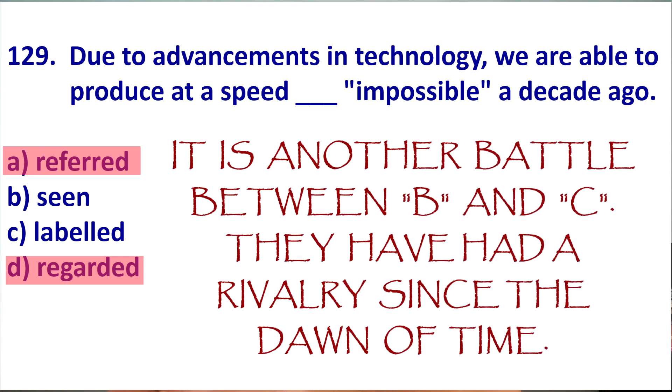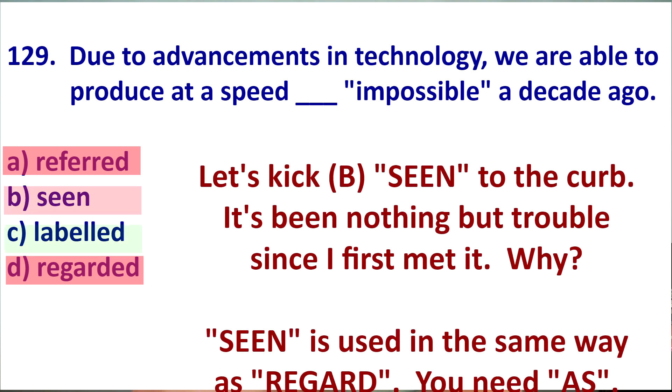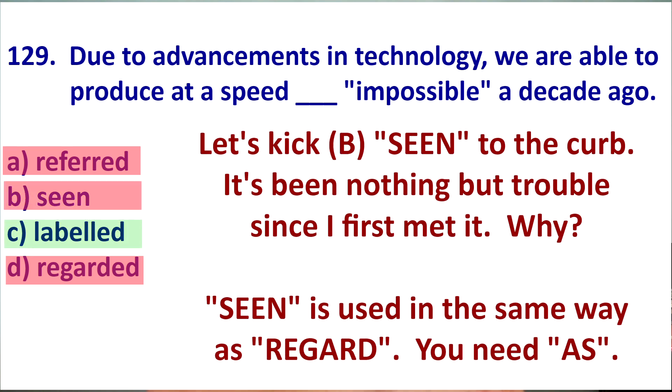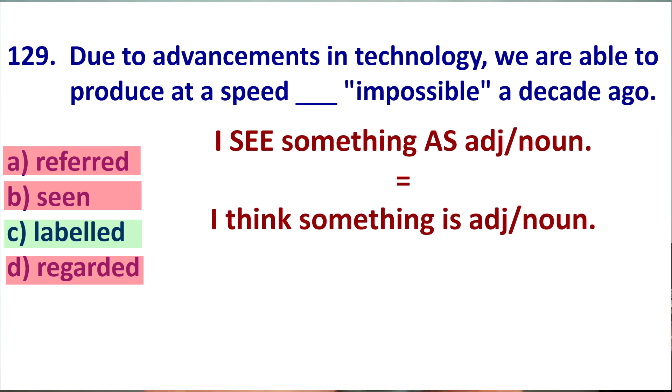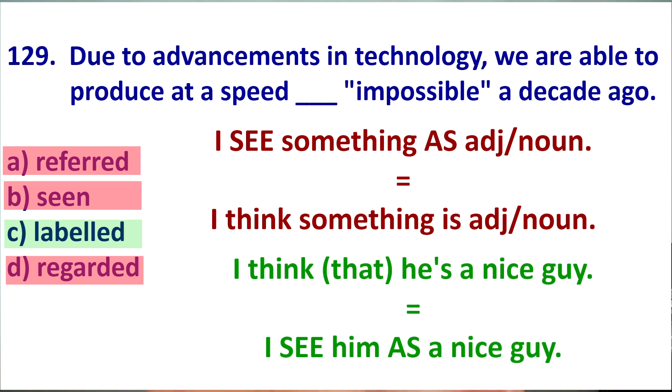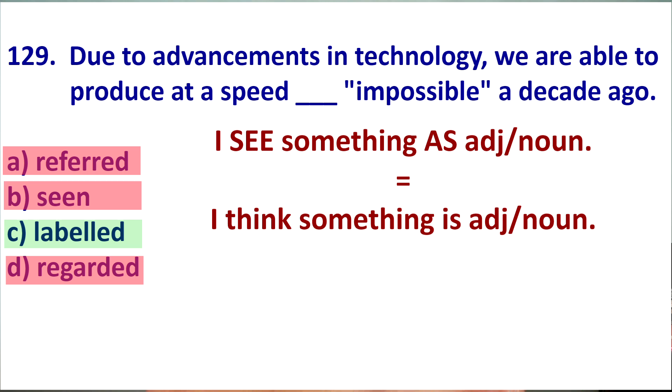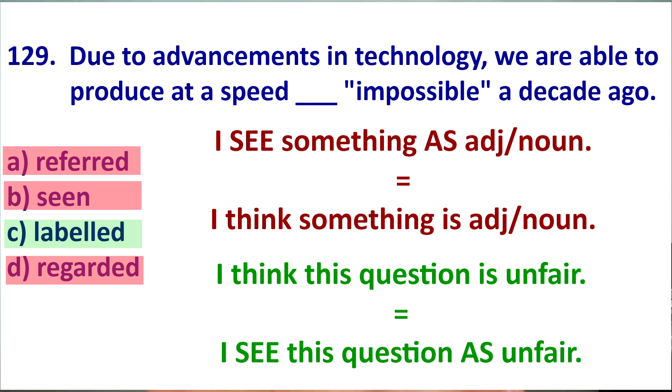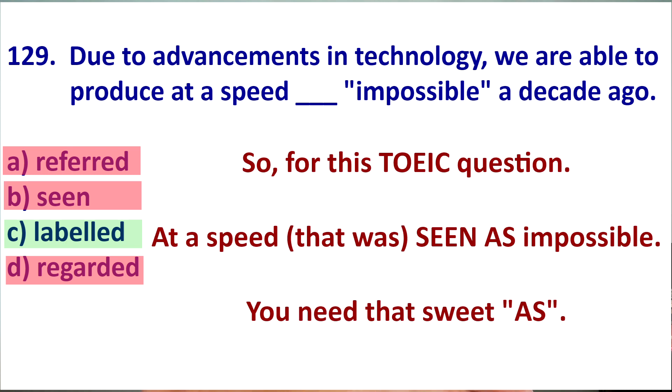So, what does this leave us with? We have two answers left. B or C. Now, they've never liked each other. I know that. But, what can we eliminate next? Well, we can eliminate B. Because, C is used in the same way as regard. It can mean, I think. I view something as. For example, I think he's a nice guy. I see him as a nice guy. I think this question is unfair. I see this question as unfair. So, it is a question that is seen as unfair. So, when we give our opinion about something using C, the form is, I see it as adjective, noun, gerund. So, for this answer, that people saw as is possible would be correct. If it said that was seen as impossible.